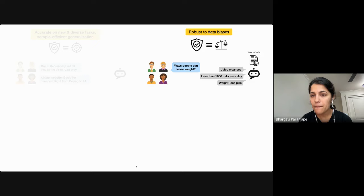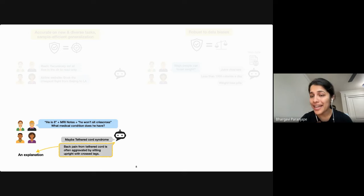Users are also more likely to trust the model's response if it comes with an explanation. If they are being prompted for a medical diagnosis, users want to be able to get the model to explain why it's predicting a particular medical condition. So they want models to be transparent, typically through human-understandable explanations.